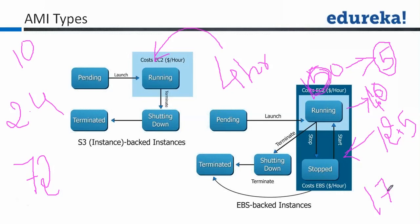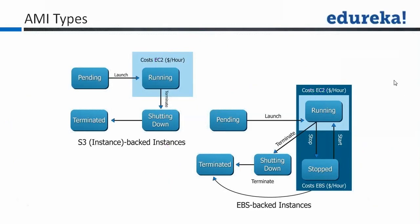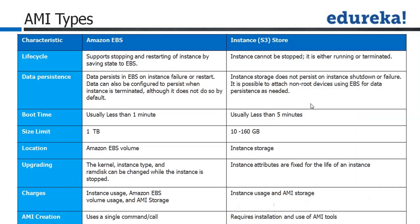So even if you only need to stop the instance for 1 to 2 hours, you can use an EBS-backed instance and benefit from the savings. Apart from cost, EBS-backed instances have many other advantages: it is very easy to create an AMI — just right-click and create AMI — it is faster to boot, and it supports the stop state. That is why in 90% of cases people use EBS-backed instances.